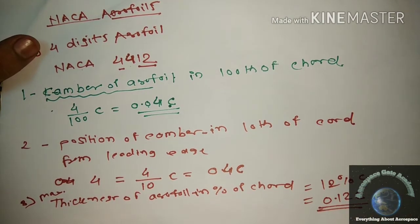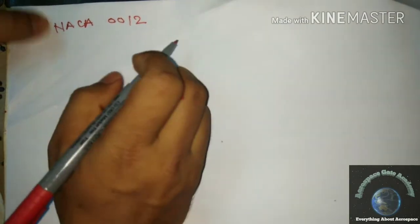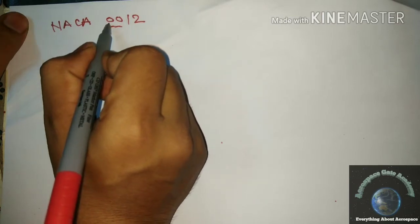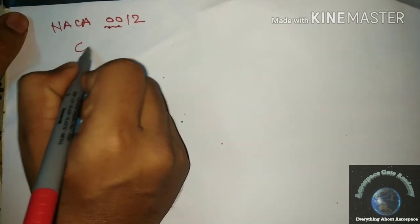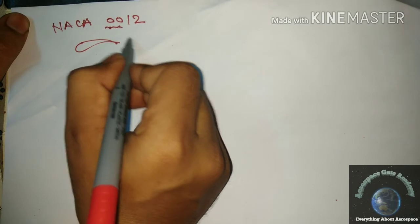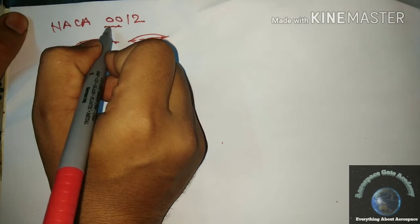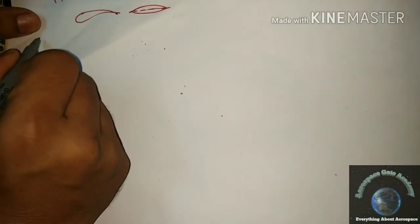In some cases, they will give NACA 0012. When the first and second digits are both 0, it means the maximum camber and position of maximum camber are zero. This means the airfoil is symmetric.